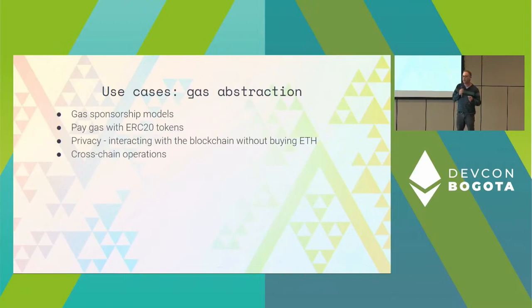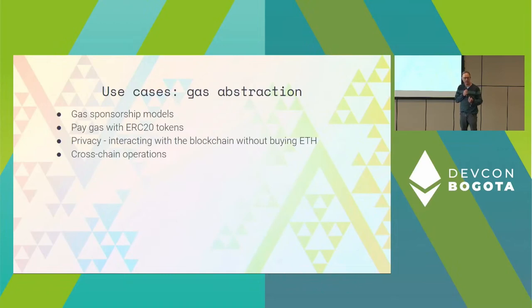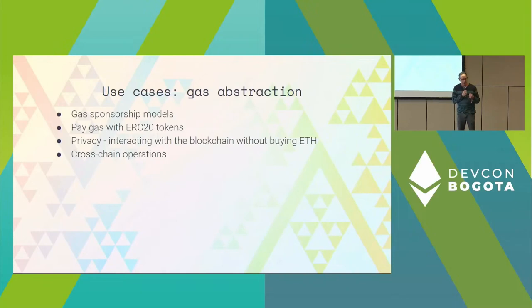Privacy: if you want to protect your privacy and use a mixer like Tornado Cash, you put money in, but to withdraw you need gas—which you'd have to get from some KYC account, meaning you're not really anonymous. With an account abstraction model, you can use part of the amount you withdraw from the mixer as a gas payment, so you can withdraw completely anonymously.